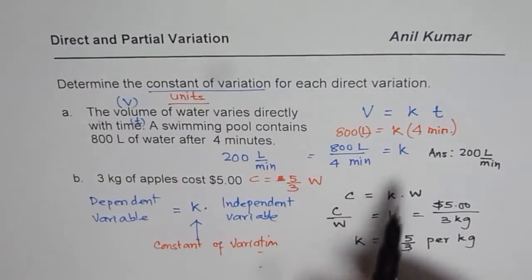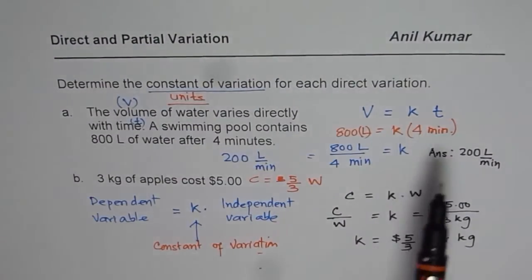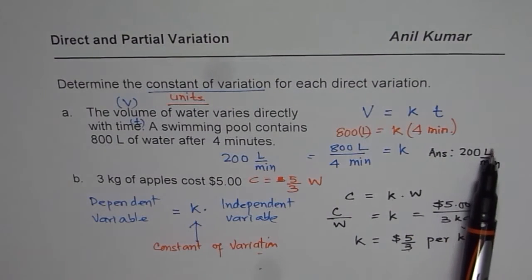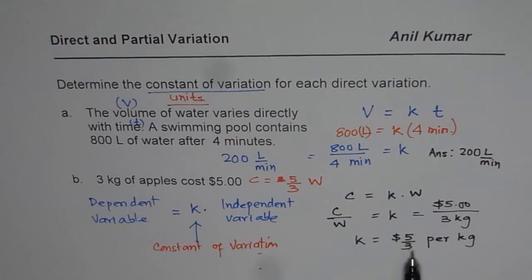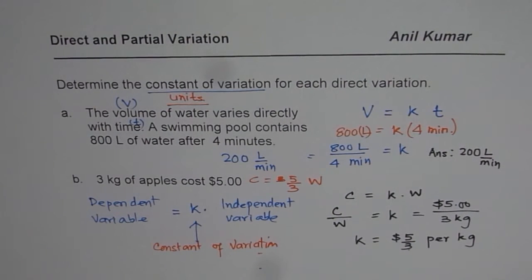In the first case, the constant of variation is 200 liters per minute. In the second case, the constant of variation is 5/3 dollars per kg. That is how you should be answering these questions. Thank you and all the best.